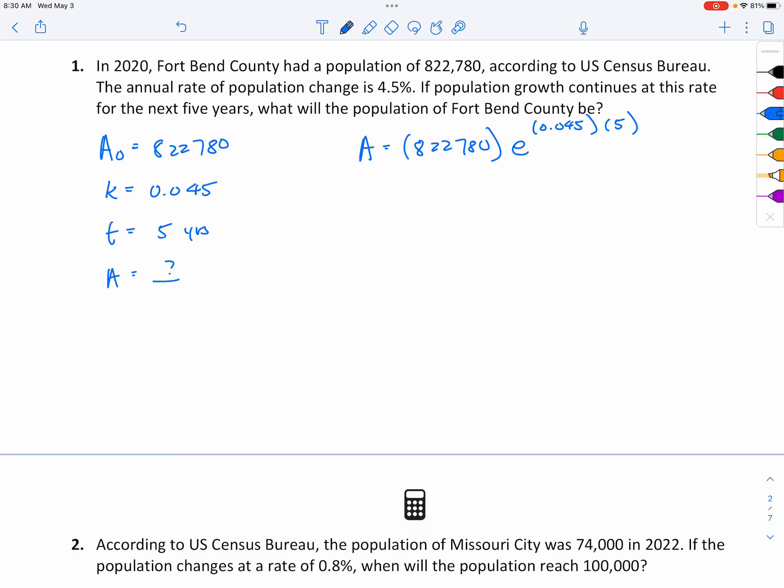So you have the rate, you have the time, you have the initial amount. Voila. Just go ahead and put this into the calculator, and that should give you the amount accordingly.